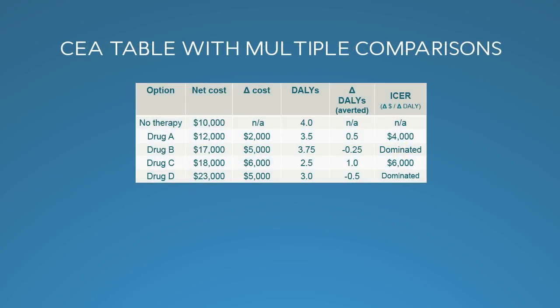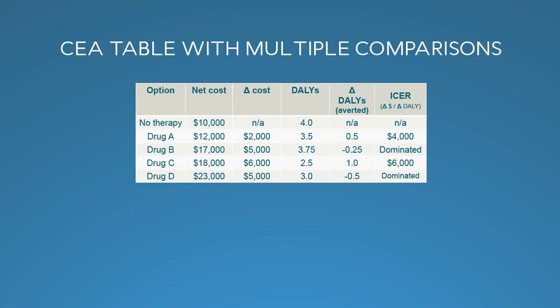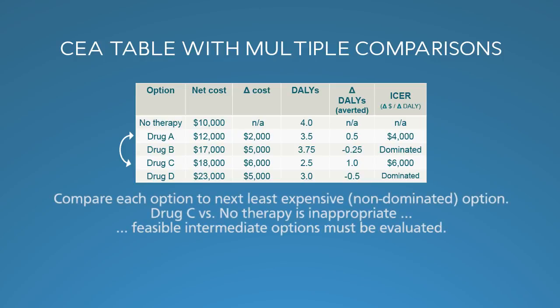Now let's look at a table with more comparisons. We've kept Drugs A and B and added Drugs C and D. Drug C has a higher net cost, but it also works a lot better. Drug D has a still higher cost, but it doesn't work as well. So we have two viable strategies, A and C, both with positive ICERs: $4,000 for A versus no therapy, and $6,000 for C versus what? In an incremental CEA, we compare each option to the prior option. But B is dominated and therefore irrelevant, so we skip to the closest viable option and compare C to A. We're comparing each option to the next least expensive option, not to the cheapest option at the top of the table.